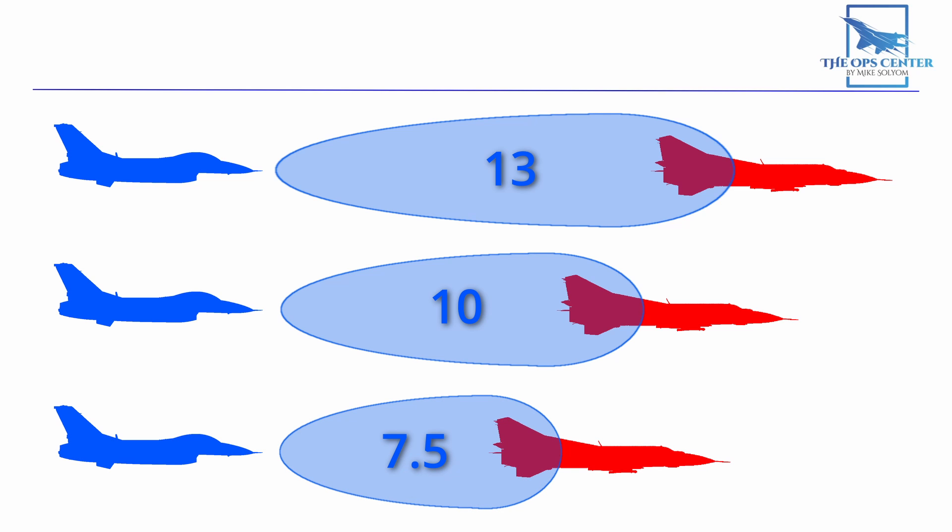The takeaway here is that at low altitudes, you're going to see ranges that seem ridiculously short. When chasing a low level bandit, you're more likely to see misses even at close range. So an 8 mile shot, which is practically a guaranteed hit at 25,000 feet, could easily run out of energy on a stern aspect target at only 1,000 feet.